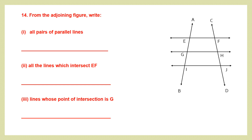Next question: from the adjoining figure, write all pairs of parallel lines. There are three lines. EF is parallel to GH, and GH is parallel to IJ, and EF is also parallel to IJ. So we have three pairs of parallel lines: EF ∥ GH, GH ∥ IJ, and EF ∥ IJ.